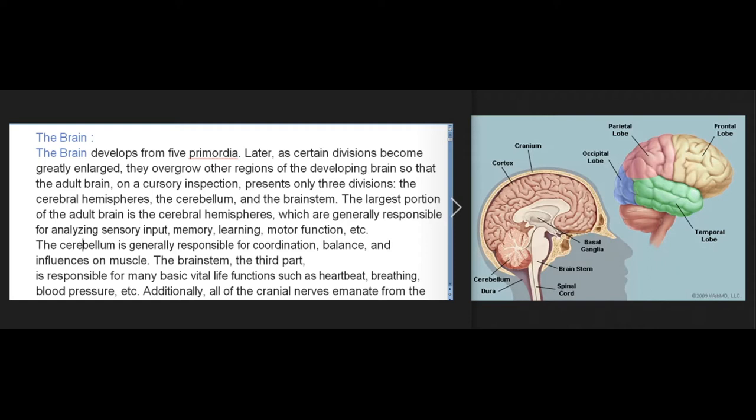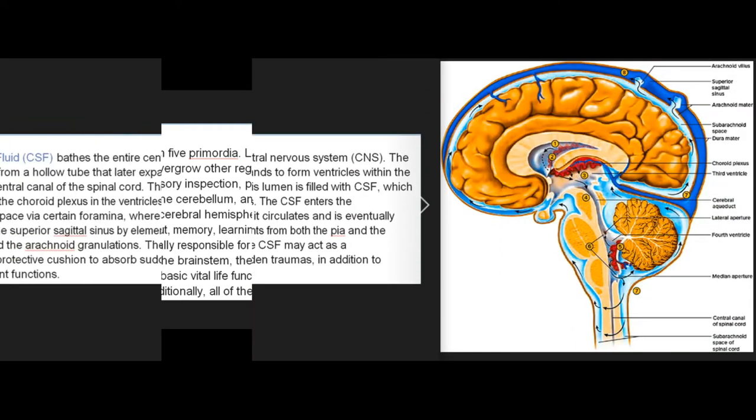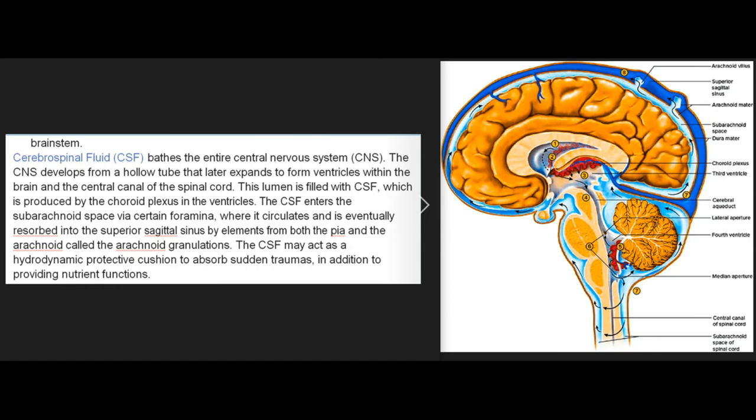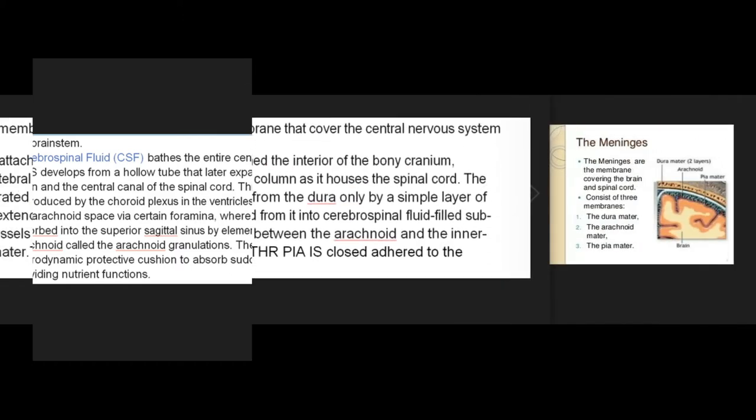The brainstem is responsible for many basic vital life functions such as heartbeat, breathing, and blood pressure. Additionally, all of the cranial nerves emanate from the brainstem. Cerebrospinal fluid (CSF) bathes the entire central nervous system (CNS). The CNS develops from a hollow tube that later expands to form ventricles within the brain and the central canal of the spinal cord. This lumen is filled with CSF, produced by the choroid plexus in the ventricles. CSF enters the subarachnoid space via certain foramina, circulates, and is eventually resorbed into the superior sagittal sinus by arachnoid granulations. CSF may act as a hydrodynamic protective cushion to absorb sudden traumas, in addition to providing nutrient functions.